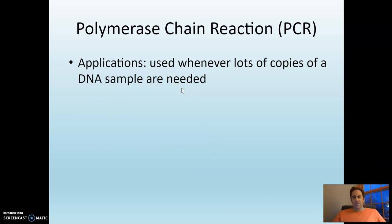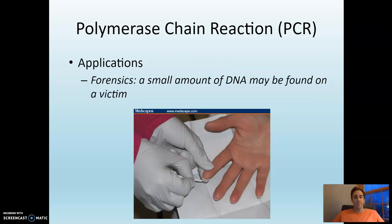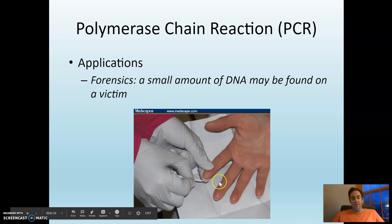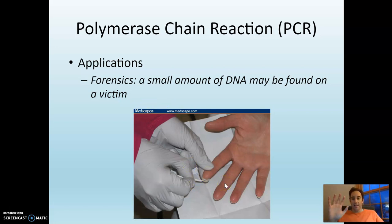Why would we want to use this? Anytime you want lots of copies of DNA, you can use PCR. An example would be in forensics — a small amount of DNA could be found on a victim, for example under the fingernails. If a victim is attacked, they might scratch their attacker and get some cells there. PCR can be used to amplify that DNA and make enough copies to study and analyze.